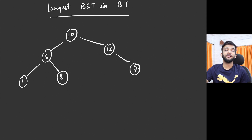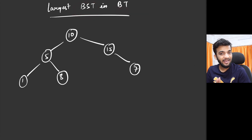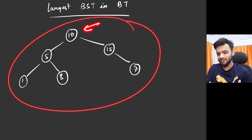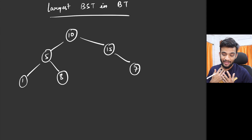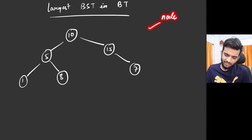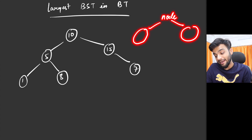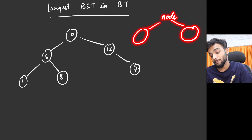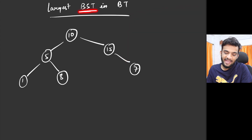Hey everyone, welcome back to the channel. Today we will be solving the problem of finding the largest BST in a given binary tree. You will be given the root of a binary tree and you have to find the largest BST among it. A BST means everything to the left of a node is smaller and everything to the right is greater.